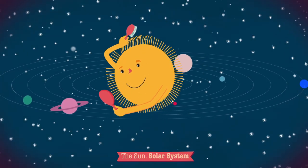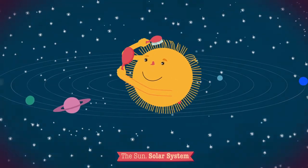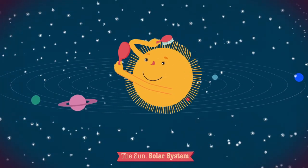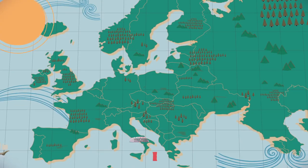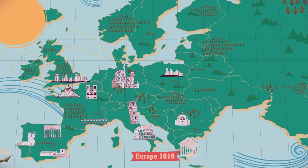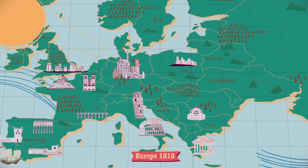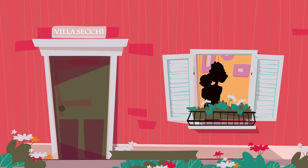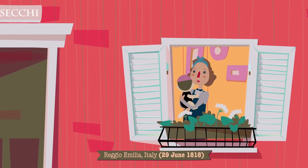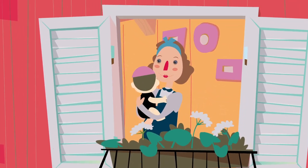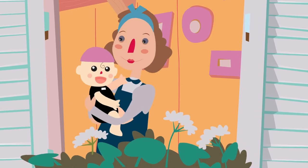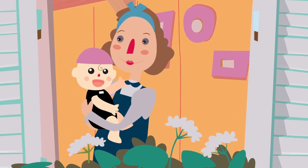Spikulen sind Gasströme, die von den Magnetfeldern der Sonnenatmosphäre eingegrenzt werden. Sie wurden im 19. Jahrhundert in Italien entdeckt. An einem heißen Sommertag wurde Angelo Secchi in der italienischen Stadt Reggio Emilia geboren.